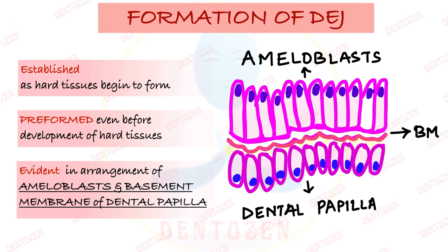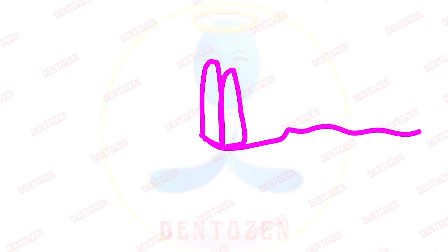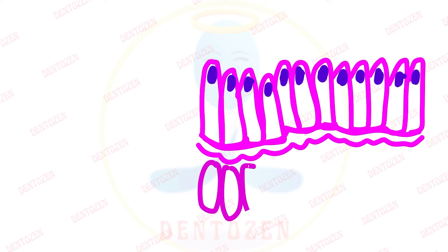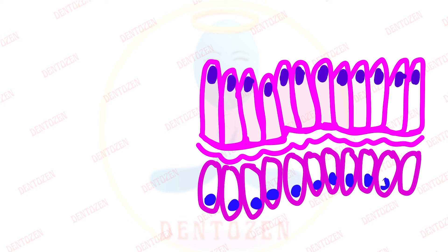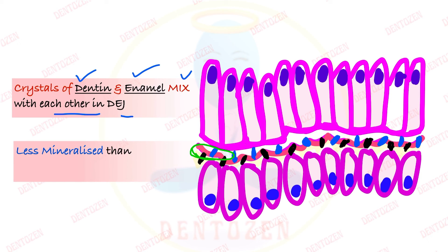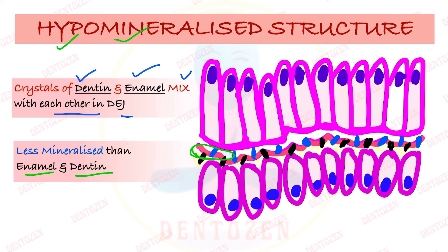When dentine and enamel form, ameloblasts form enamel and odontoblasts form dentine. The crystals of dentine and the crystals of enamel both come into this junction and get mixed with each other at this junction. If we talk about the mineral content of this junction, it is less compared to enamel and dentine, so we can say that it is a hypo-mineralized structure.